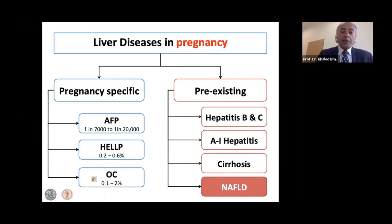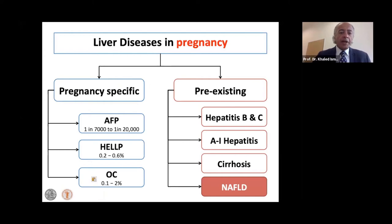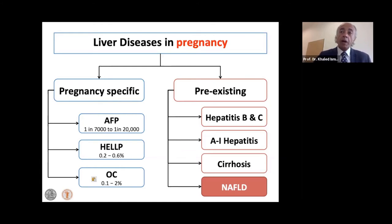Liver disease in pregnancy can either be pregnancy-specific — a complication of the pregnancy itself — or pre-existing, meaning the woman already has a liver problem and is currently pregnant. The pregnancy-specific conditions are not very many. The most serious of them is acute fatty liver of pregnancy (AFLP). It is very serious and can have deleterious effects for both the mother and the fetus, however it is also very rare.